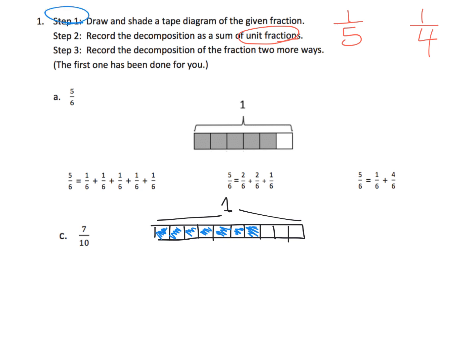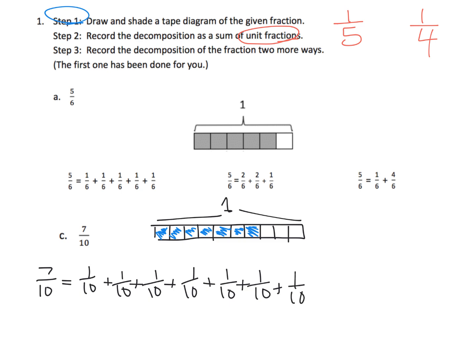Now we record it as a sum of unit fractions. Seven-tenths is going to be one-tenth plus one-tenth plus one-tenth plus one-tenth plus one-tenth plus one-tenth plus one-tenth — one, two, three, four, five, six, seven. There's our seven-tenths as a sum of unit fractions.